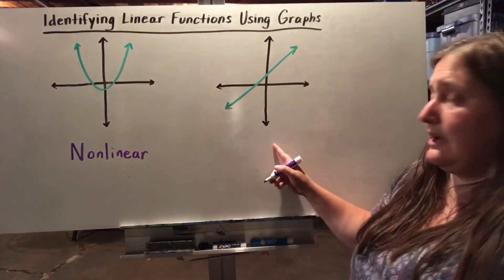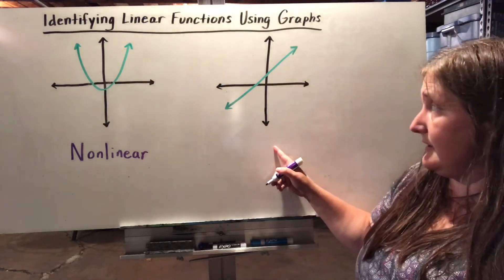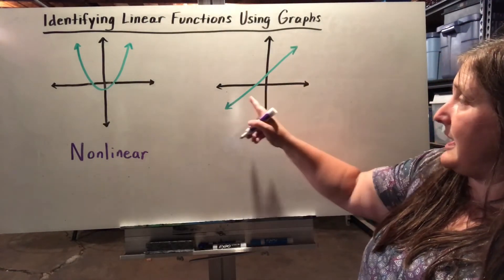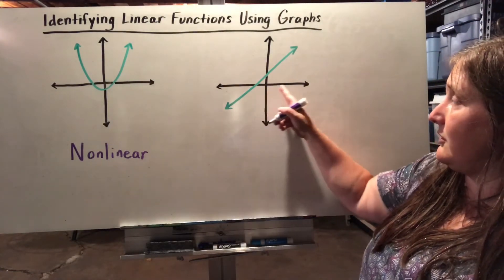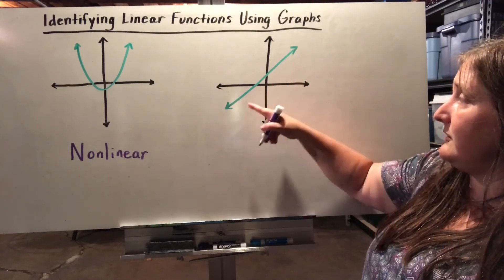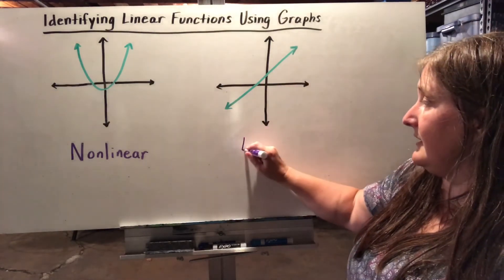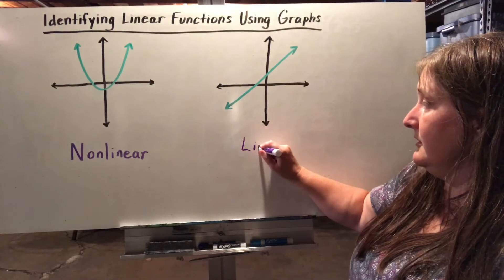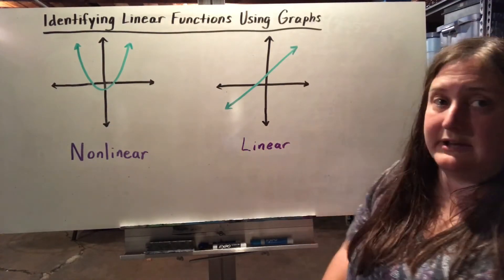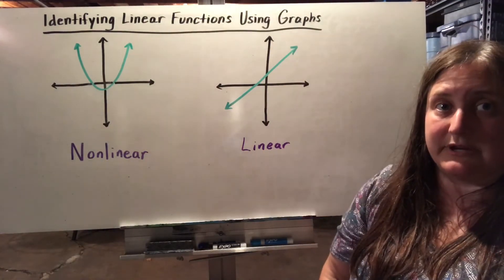Whereas here I have a straight line — it's not a vertical line. I notice that as I go across the graph, my x values are increasing and so are my y values; the line is going up. This represents a linear function. It's a straight line and has a constant rate of change.